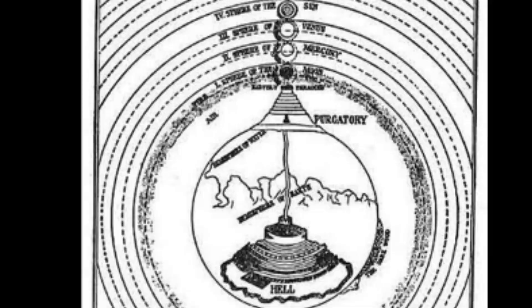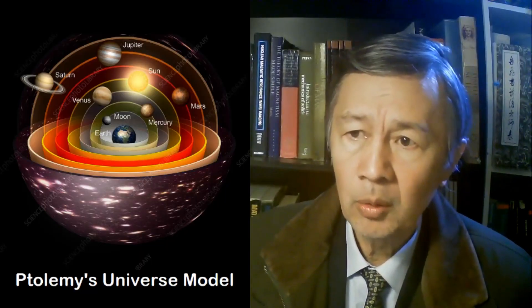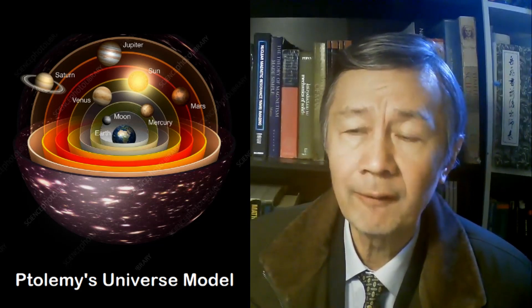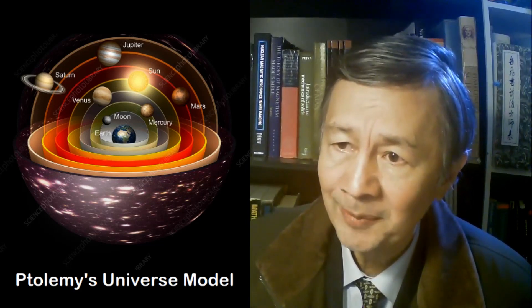Aristotle believed that. So did Ptolemy, who had numerically worked out the orbits for several visible stars. Of course, we know nowadays that some of them are actually planets.